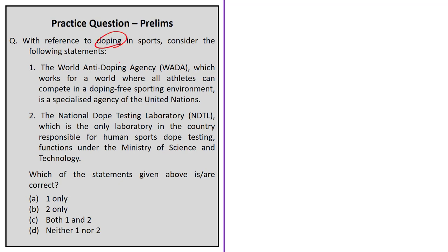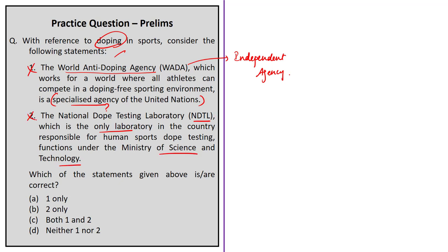Statement 2 of the CGHS question — that beneficiaries include sitting and ex-Members of Parliament, sitting and ex-judges of the Supreme Court and High Courts, and eligible journalists — is correct. Therefore, the correct answer is option B, statement 2 only. The doping question: Statement 1 says WADA is a specialized agency of the United Nations — this is incorrect, as it is an independent international agency. Statement 2 says NDTL functions under the Ministry of Science and Technology — this is incorrect, as it functions under the Ministry of Youth Affairs and Sports. Correct answer: option D, neither one nor two.